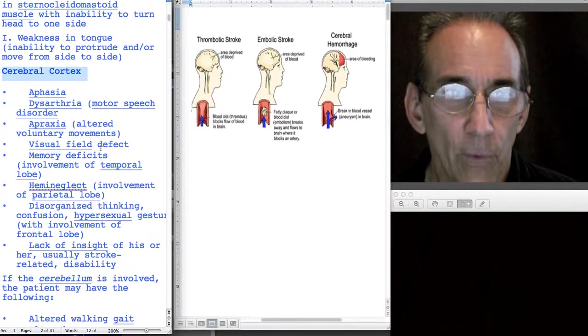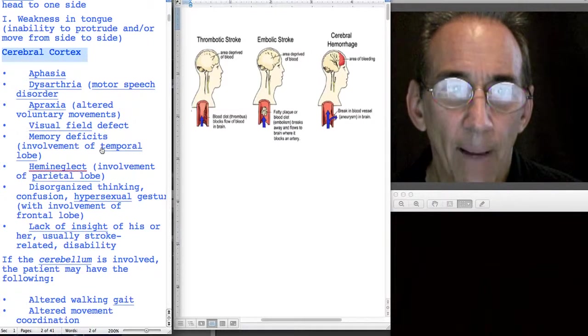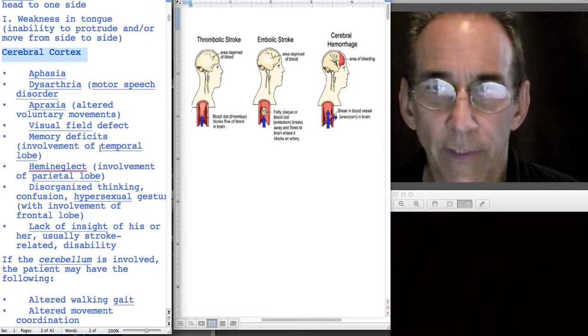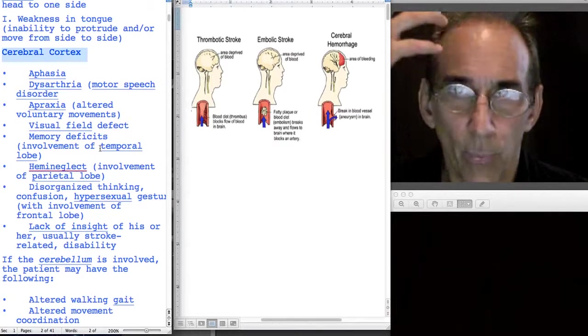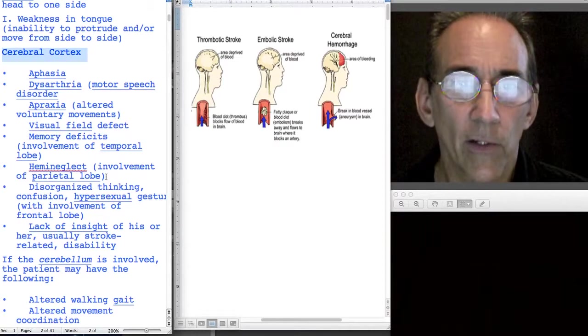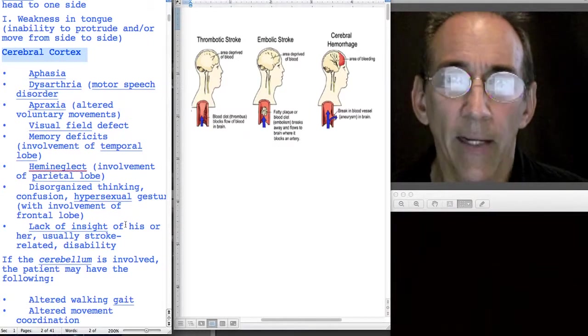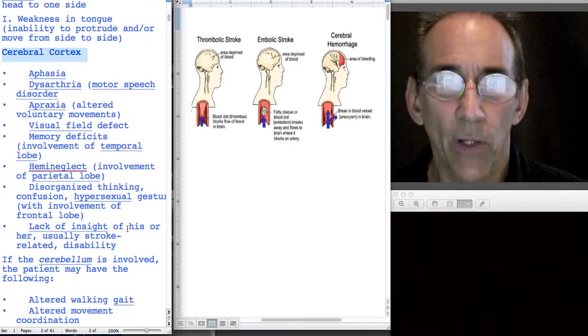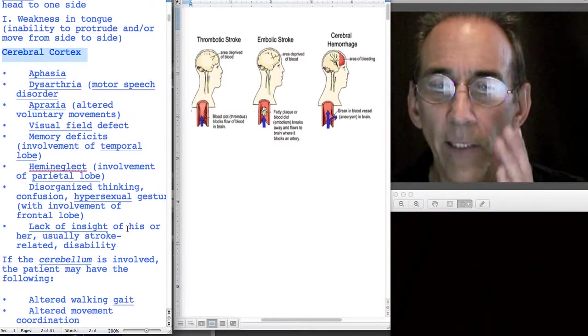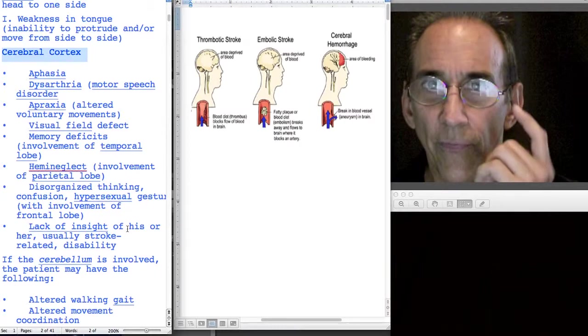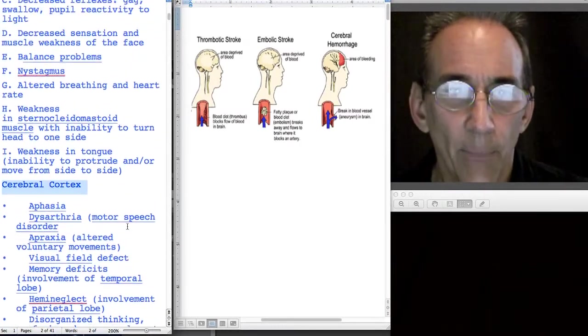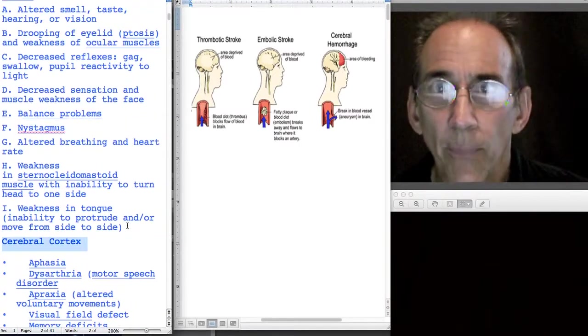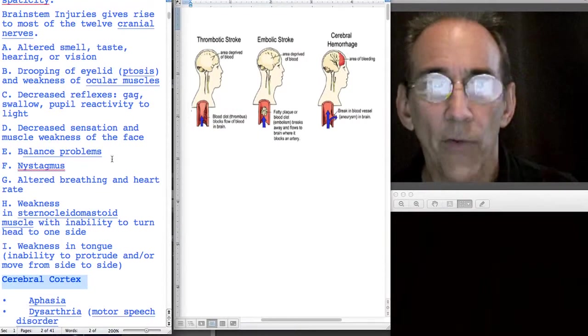The clot can form in various places and according to where it forms you're going to get different symptoms. For example, if it happens in the central nervous system, more or less in the brain area, you're going to get hemiplegia, weakness on one side, weakness on the whole side of the face except the eyebrows, numbness in part of the body.